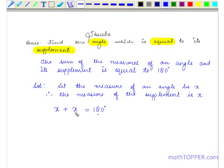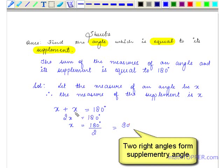x plus x equals 2x which is equal to 180 degrees. Hence x is equal to 180 degrees divided by 2 which is equal to 90 degrees.